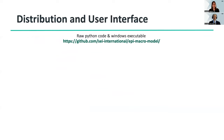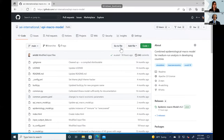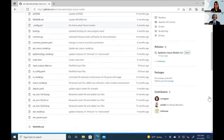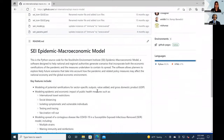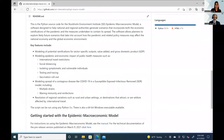The model is distributed both as raw Python code and a Windows executable. For the Windows executable, you only modify input files, whereas with the raw Python code you can modify the model itself. The model is freely available on its GitHub page. When you click on the link, you'll find a list of all the files that come with the EPI Macro Model, a readme with a short description, and several documentation files. On the right it includes several releases, including the latest one.